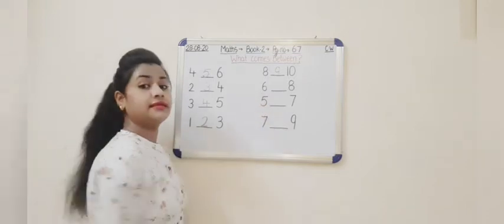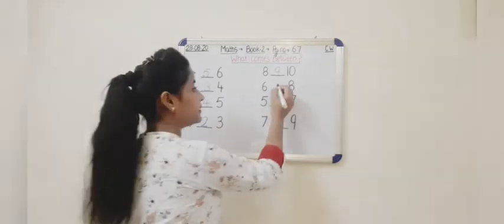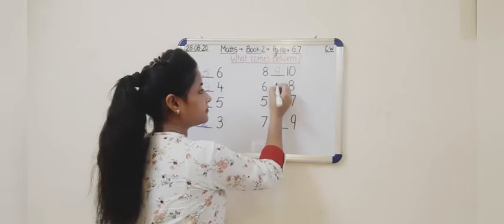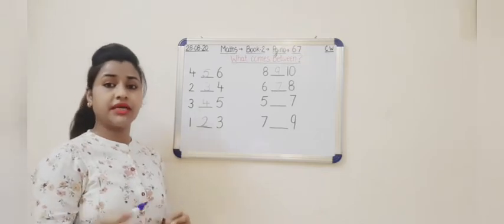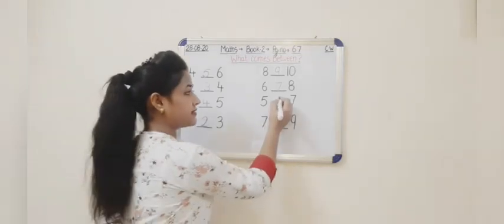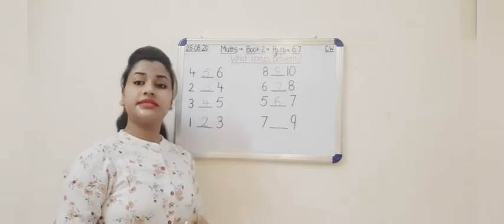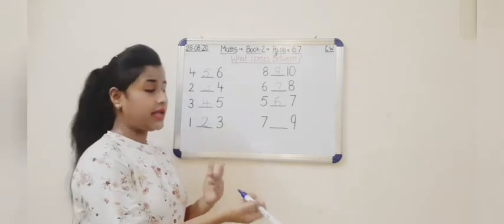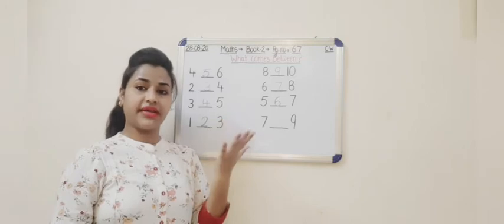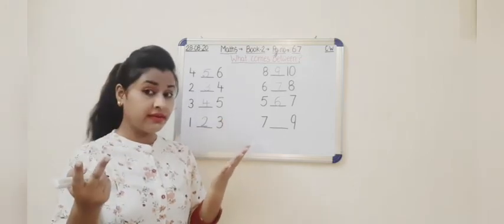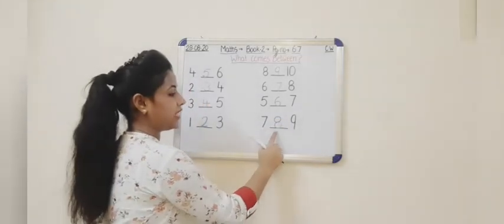Now tell me which number is this? This is the number 6. So do you know which number comes after 6? It is number 7. Which number is this? This is the number 5. Do you know which number comes after 5? It is 6. Now which number is this? This is the number 7. Do you know which number comes after 7 and between 7 and 9? Count: 1, 2, 3, 4, 5, 6, 7, 8. So we will write here 8. Count: 7, 8, 9.